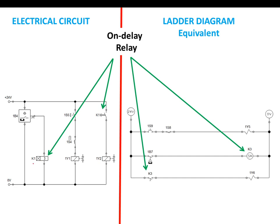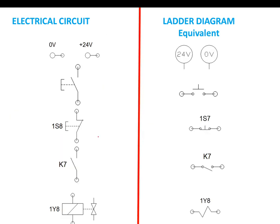Here we are seeing the time delay relay, where it is circular for the ladder diagram and rectangular for the electrical circuit. Their contacts also look a bit different in terms of symbol. Here is a list of the different components used in both circuits.